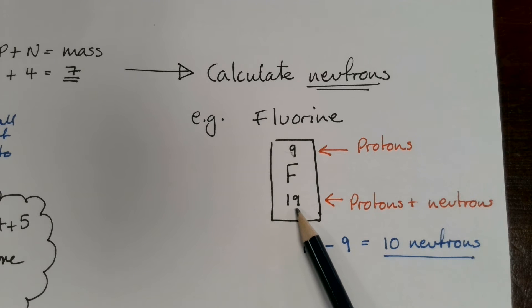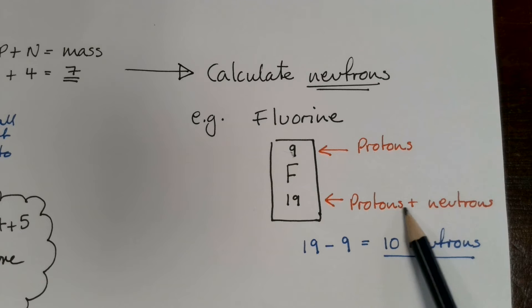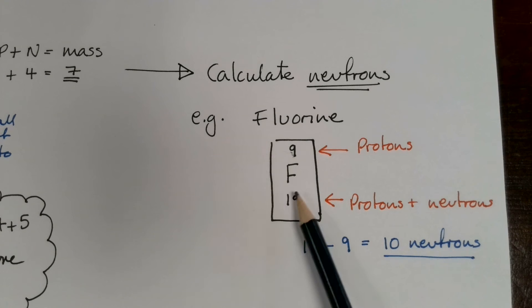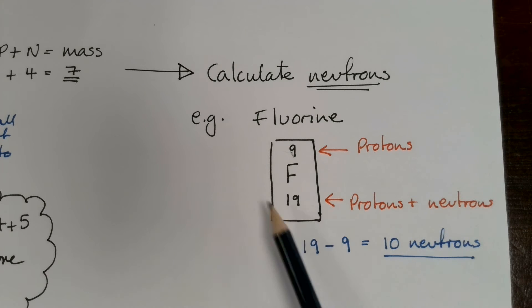And this is compared to the mass number, which is the protons and the neutrons together. So if we want to work out how many neutrons fluorine has, we simply work out the difference between the two numbers. And in this case, it's 19 subtract 9. That means there are 10 neutrons in this atom. And this works for every element in the periodic table.